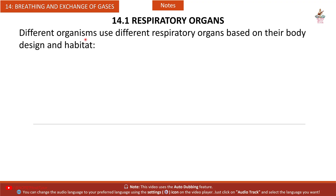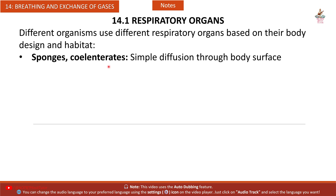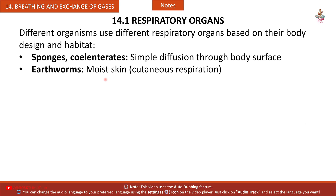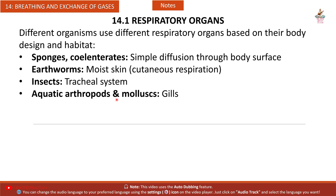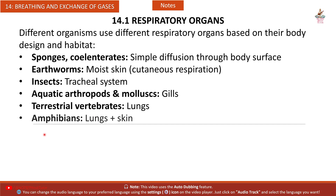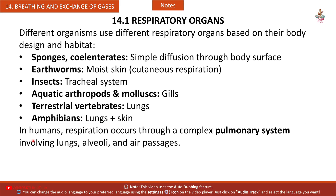Section 14.1 — Respiratory Organs. Different organisms use different respiratory organs based on their body design and habitat. Sponges and coelenterates use simple diffusion through the body surface. Earthworms use moist skin (cutaneous respiration). Insects use a tracheal system. Aquatic arthropods and molluscs use gills. Terrestrial vertebrates use lungs. Amphibians use both lungs and skin. In humans, respiration occurs through a complex pulmonary system involving lungs, alveoli, and air passages.